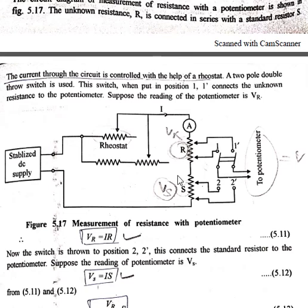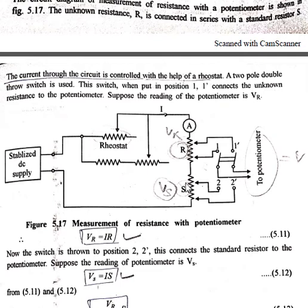When the switch is put to the first position — one and one dash — the unknown resistance is connected to the potentiometer and the voltage drop across R is measured. When the switch is thrown to position two and two dash, the potentiometer is connected to the standard resistance S, and the potential drop across S is measured.